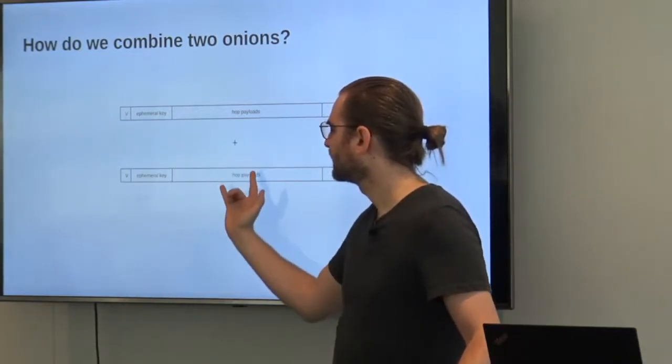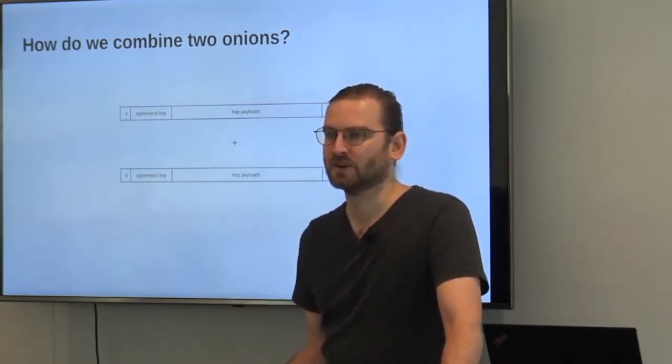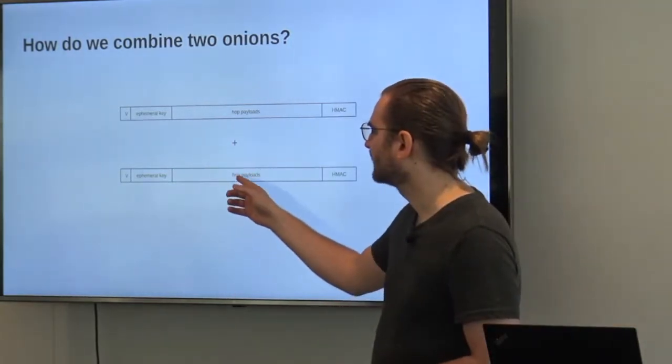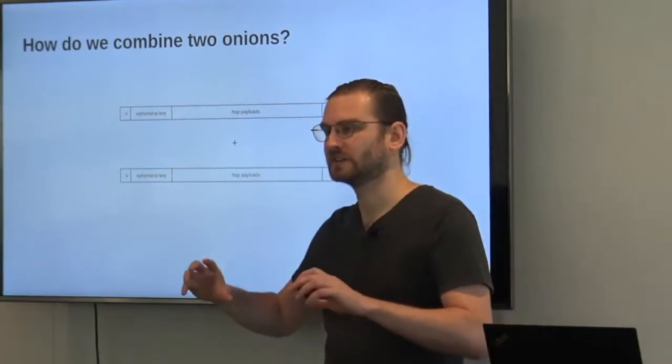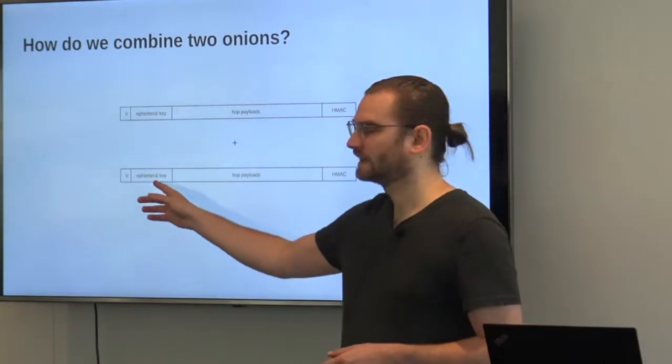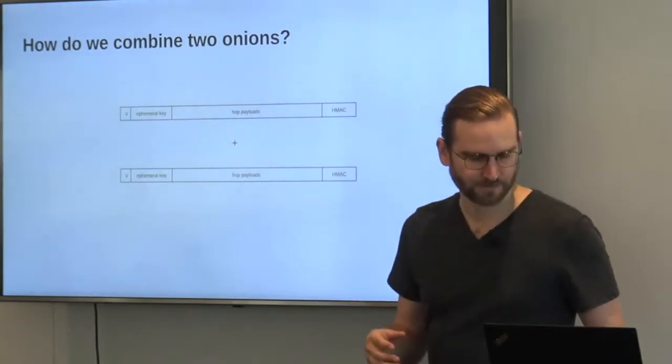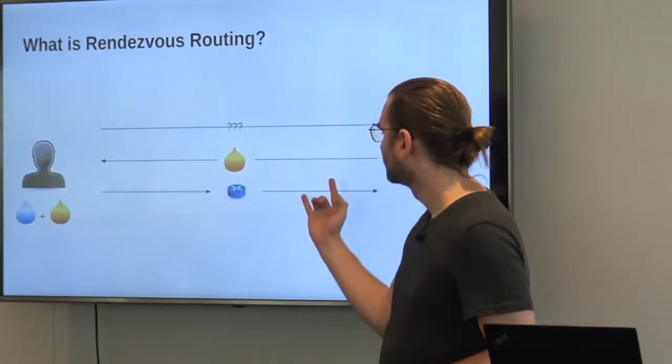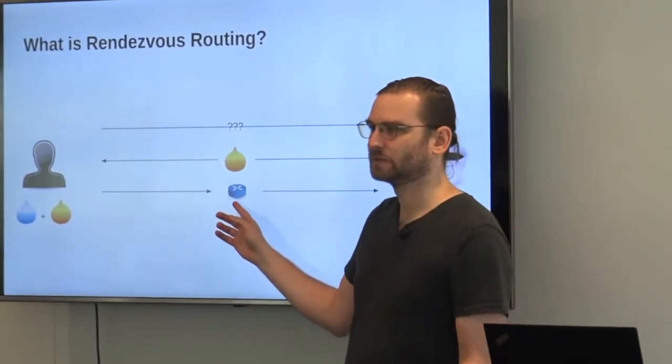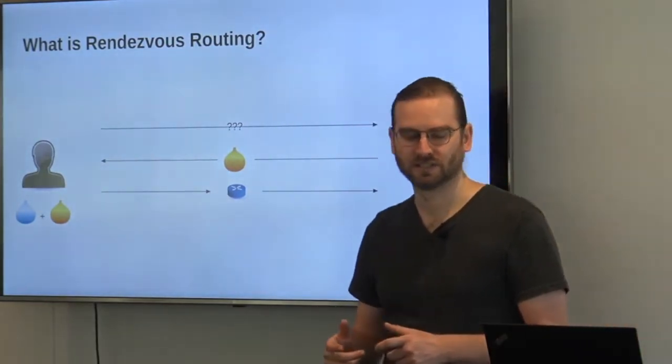So clearly putting the onion inside of the onion in this case doesn't really work, right? So what should we do then? So basically taking this and then prepending stuff and rewrapping doesn't really work because the way we modify the ephemeral key along the path, right? Because if in this case for this part of the journey the recipient generates an ephemeral key as if he were sitting here and then starts tweaking that on every hop to generate shared secrets, right?